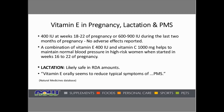How safe is vitamin E in pregnancy, lactation, and PMS? Quite safe. 400 units at weeks 18 to 22 of pregnancy, or 600 to 900 IUs during the last two months of pregnancy, showed no adverse effects. A combination of vitamins E and C — at 400 IUs and 1,000 milligrams of vitamin C — helps maintain normal blood pressure in high-risk women when starting at weeks 16 to 22 of pregnancy. Blood pressure in pregnant women is a common concern. Lactation appears likely safe in RDA amounts, and vitamin E orally also seems to reduce typical symptoms of PMS.